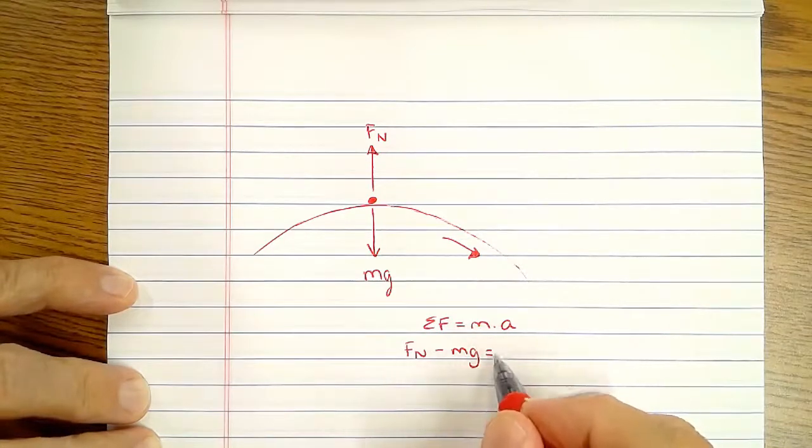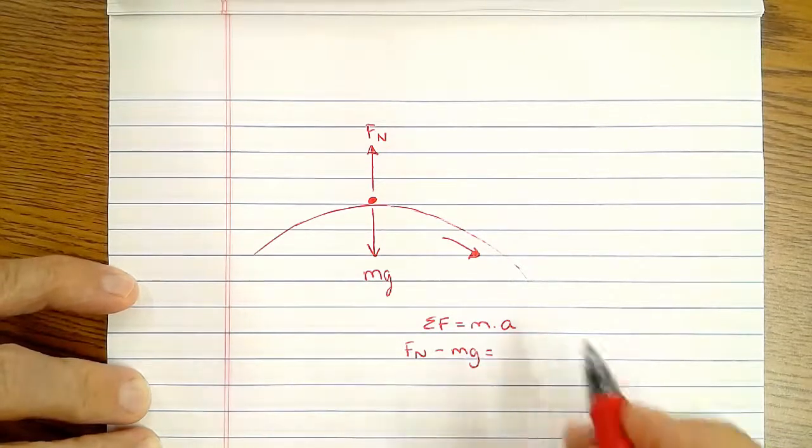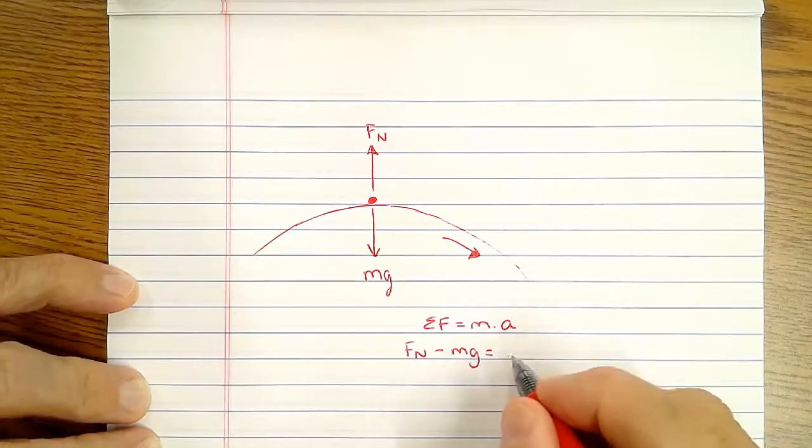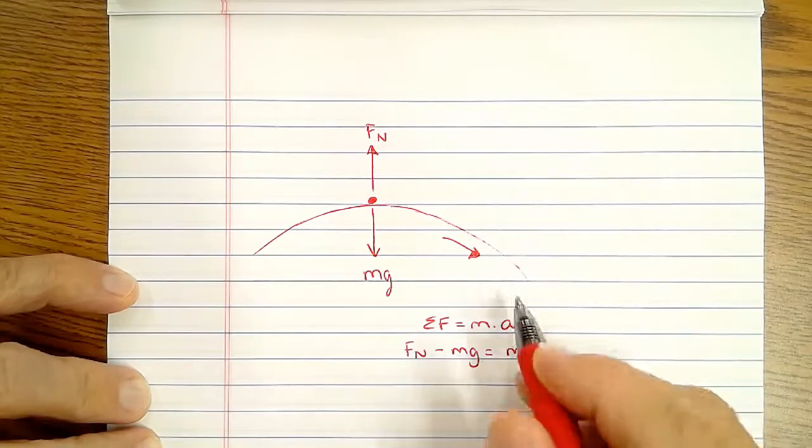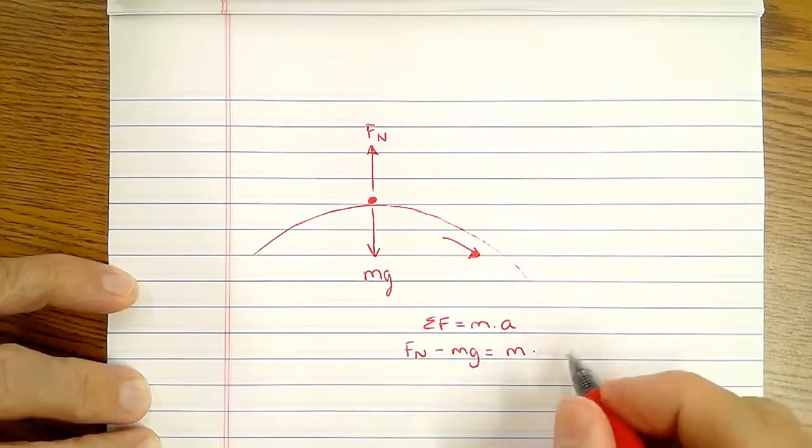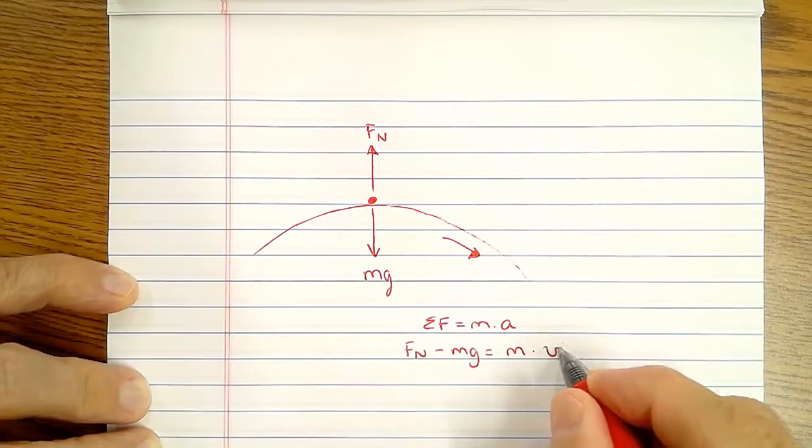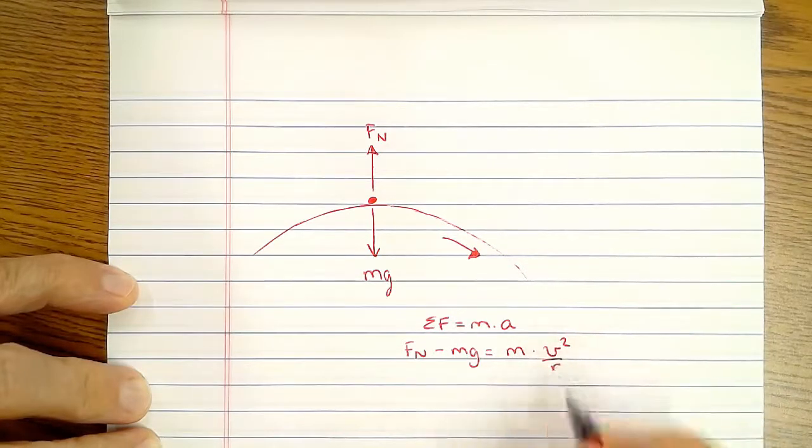But if you are accelerating, it equals the acceleration, so this will equal mass times the acceleration. Now, if we're moving in a circle, the acceleration is v squared over r.